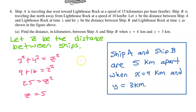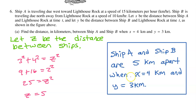As simple as this question is, let's be sure to write up our solution carefully. Don't forget to define your variable for the Pythagorean theorem. Let Z be the distance between the ships. Ship A and Ship B are 5 kilometers apart when X equals 4 kilometers and Y equals 3 kilometers.